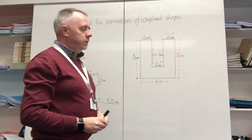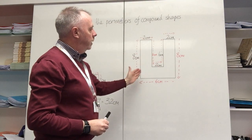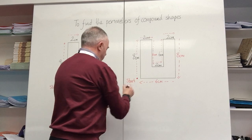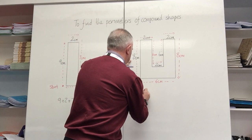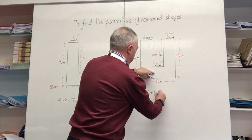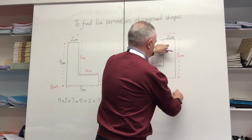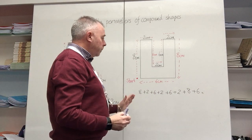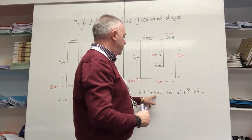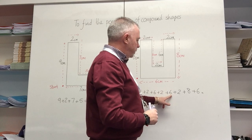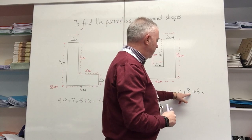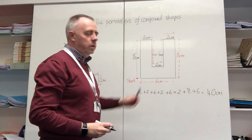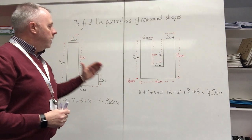All I need to do now is add all the measurements together. Starting from my starting point: 8 + 2 + 6 + 2 + 6 + 2 + 8 + 6, all in centimeters. So: 8 + 2 = 10, + 6 = 16, + 2 = 18, + 6 = 24, + 2 = 26, + 8 = 34, + 6 = 40. So the perimeter of this letter U is 40 centimeters.